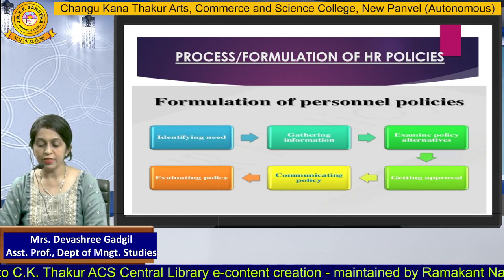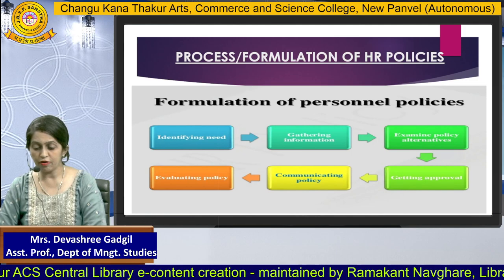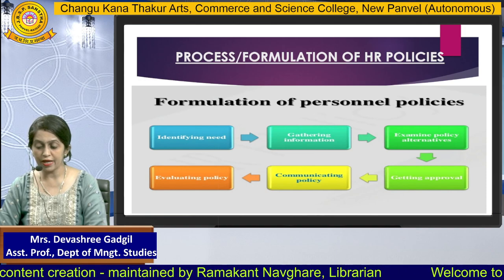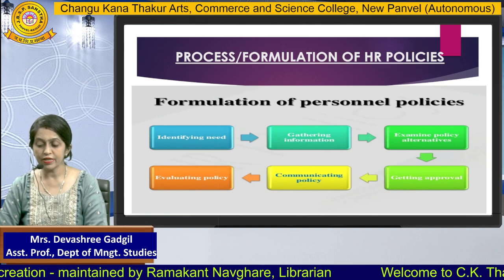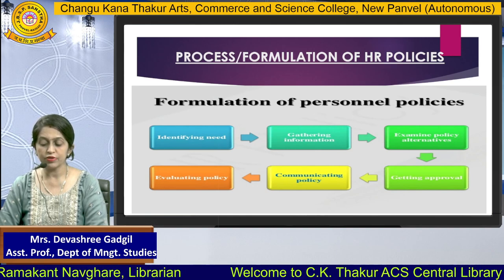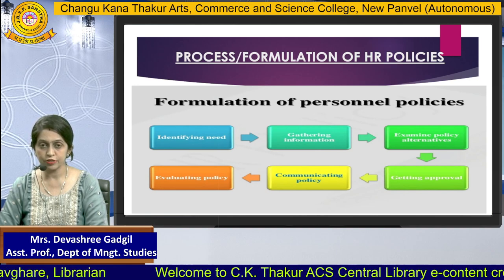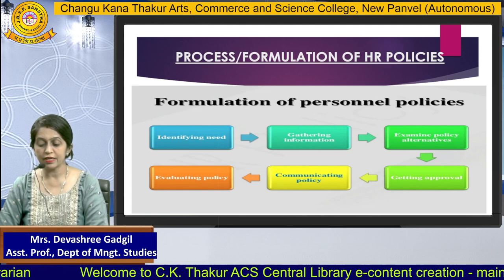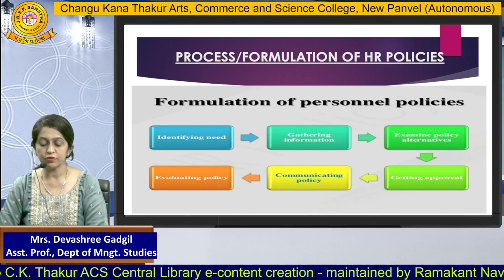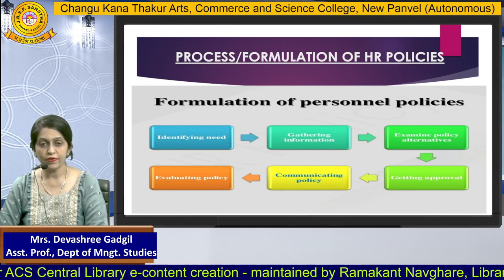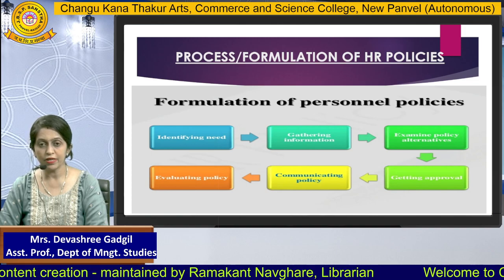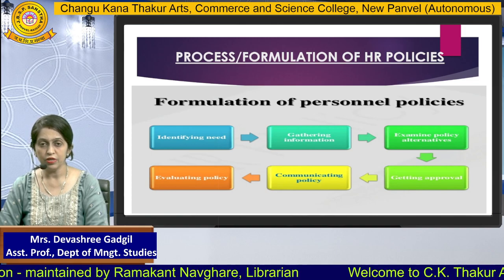Let us understand how HR policies are formulated. First, it is necessary to understand the needs of human resources in the organization and gather the relevant information. After that, there is examination of policy alternatives. Then, approval must be taken from top-level management, who are responsible for designing and implementing policies. Finally, the policy is communicated to human resources and properly evaluated, so that no misunderstandings arise.